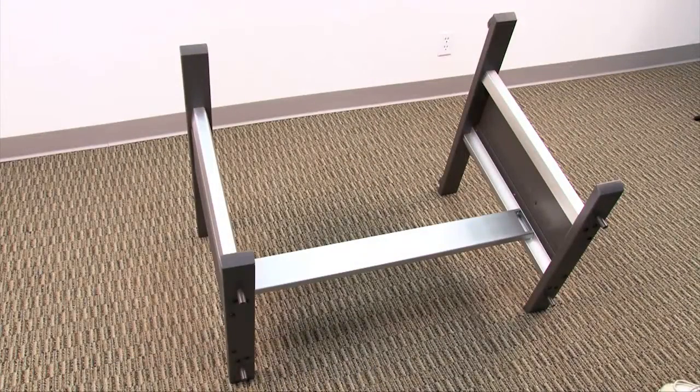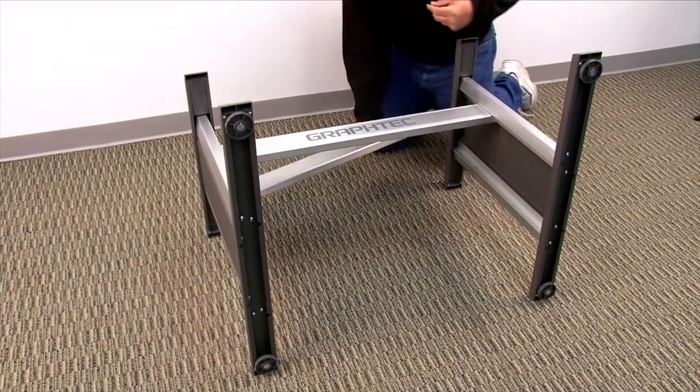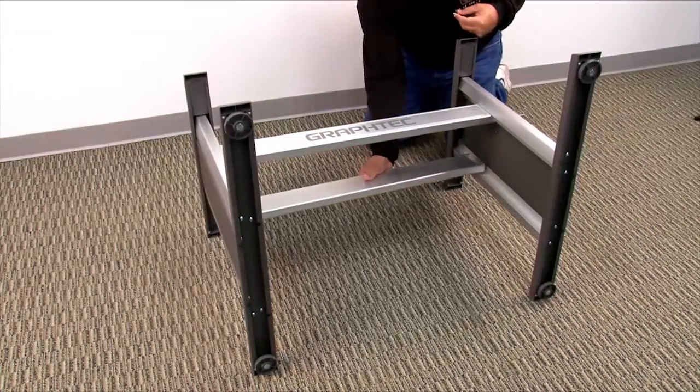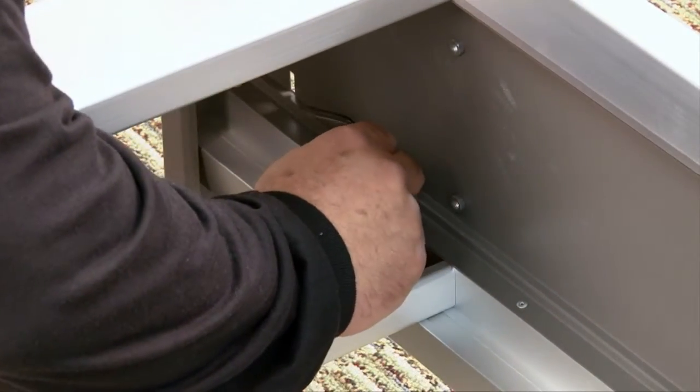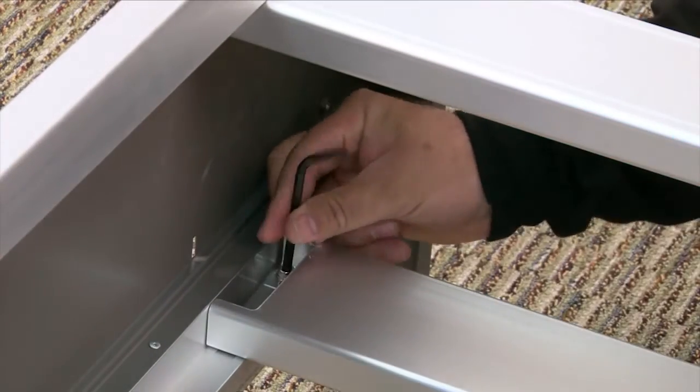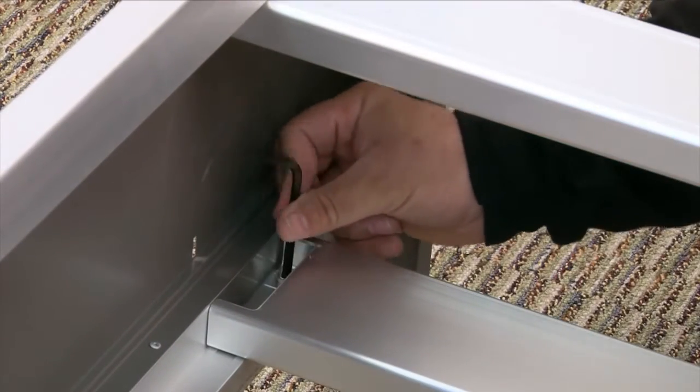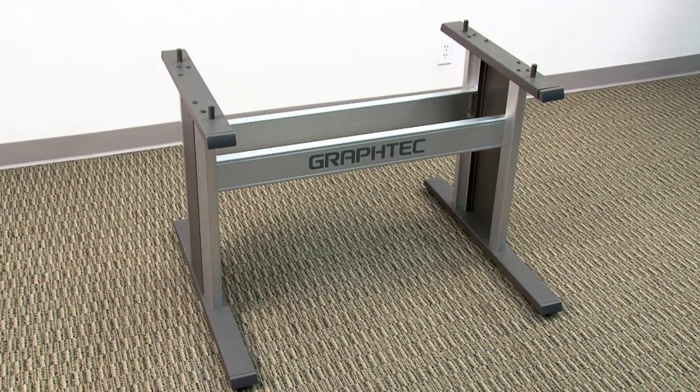Carefully flip the two side panels with the one cross arm over the other side and mount the other cross arm to the opposite side. Once the two cross arms are mounted, set the stand upright.